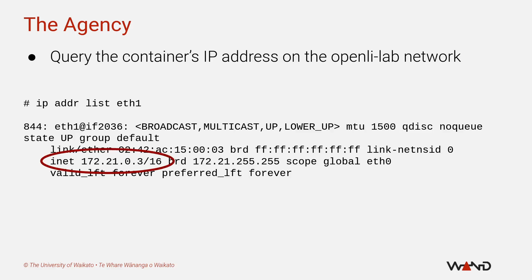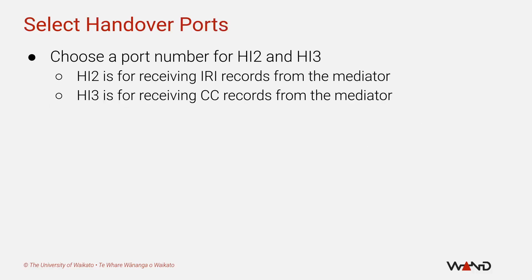In this case the address is 172.21.0.3 — it may be slightly different on your container, but as long as the address is on the same subnet as eth2 on your mediator container then everything should be fine. Each agency handover will require its own TCP port number for the handover session. Remember that there are two handovers to each agency: HI2 for IRI records and HI3 for CC records. Any port numbers above 1024 should work, but try to choose something memorable or at least write these numbers down because you'll need them very shortly.